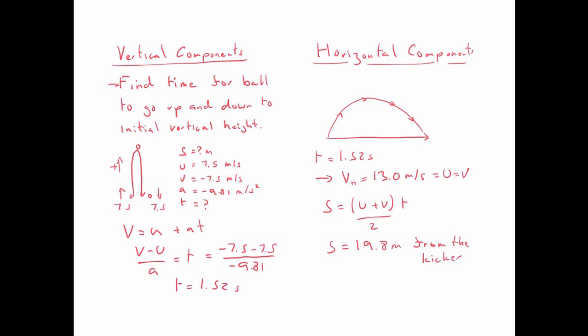So we don't know the distance, but U is going to be equal to 7.5 meters per second. V is equal to minus 7.5 meters per second. Acceleration, we've taken going up to be positive, so acceleration is minus 9.81 meters per second squared. And time we don't know. So we're going to use our SUVAT equation V equals U plus AT and rearrange for T. So V minus U over A, we get T. And we've got minus 7.5 minus 7.5 divided by minus 9.81. And we find that the time it takes for the ball to go up and back down is 1.52 seconds.